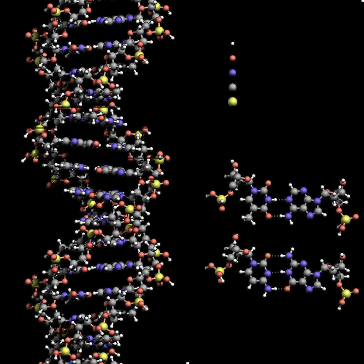Topoisomerases are enzymes with both nuclease and ligase activity that change the amount of supercoiling in DNA. Some of these enzymes work by cutting the DNA helix and allowing one section to rotate, thereby reducing its level of supercoiling, then sealing the DNA break. Others are capable of cutting one DNA helix and passing a second strand through this break before rejoining. Helicases are proteins that are a type of molecular motor, using the chemical energy in nucleoside triphosphates — predominantly ATP — to break hydrogen bonds between bases and unwind the DNA double helix into single strands.